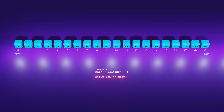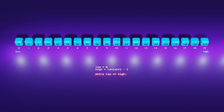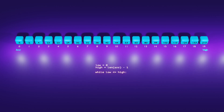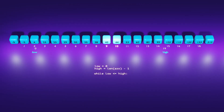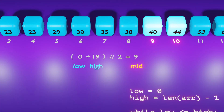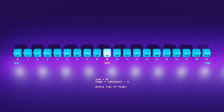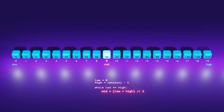Now let's calculate the index of the middle element, referred to as mid. In the case of an array with an even number of elements, the middle elements are located at index nine and ten. To handle this scenario, we consider the left one as the middle element. To find the middle index, we add the values of the low and high indices and divide the sum by two using the double forward slash operator in Python. This operator represents floor division, returning the largest integer less than or equal to the division result. So we write mid equals low plus high double-slash two.